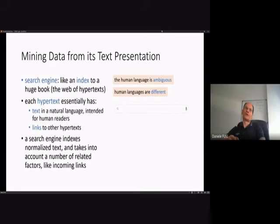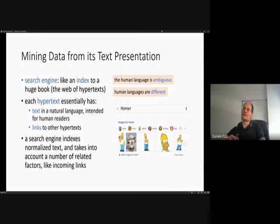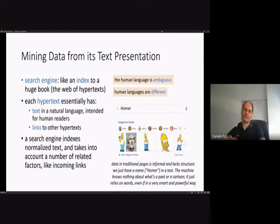Human language by its very nature is ambiguous, and there are many different human languages across the world. If you type a word like 'homer' in a Google search box, you get information about both the Greek poet and the Simpsons. This happens because data in traditional pages is informal and loosely structured — we just have a name in a text, and the machine knows nothing about whether it refers to a poet or a cartoon character.